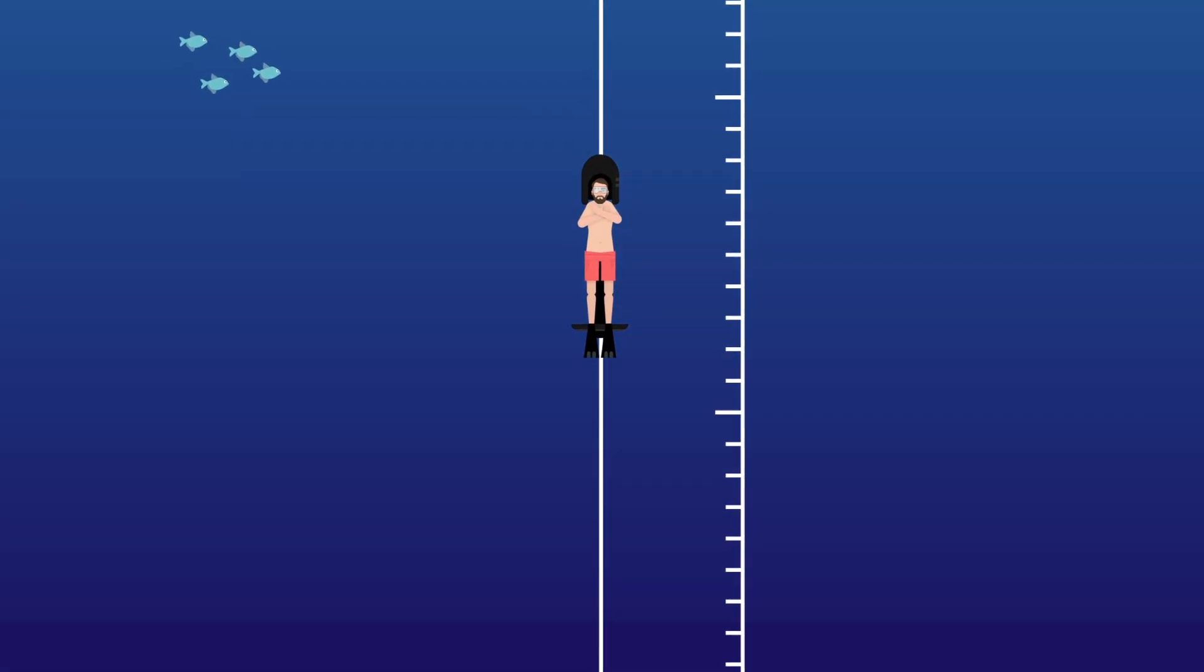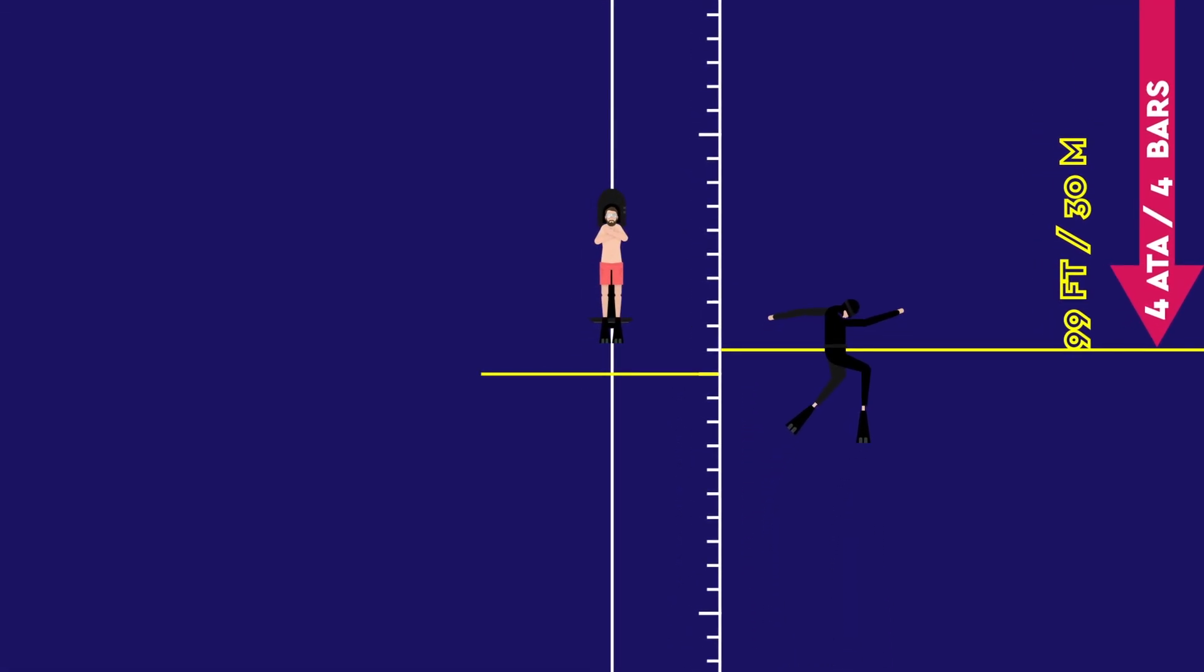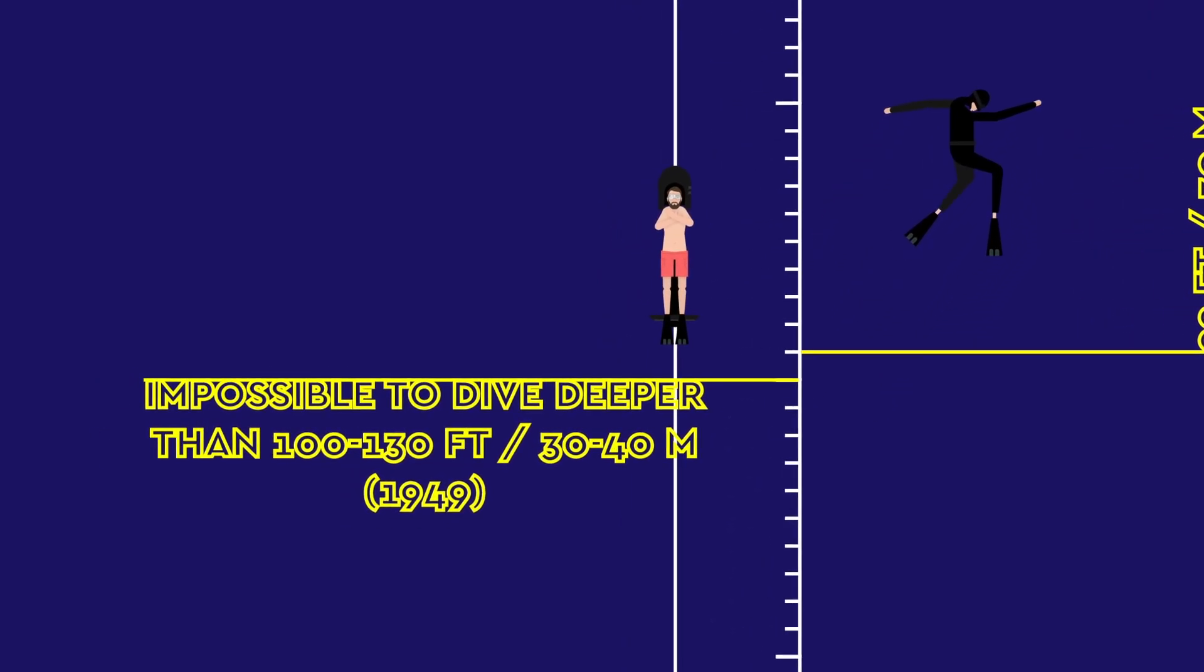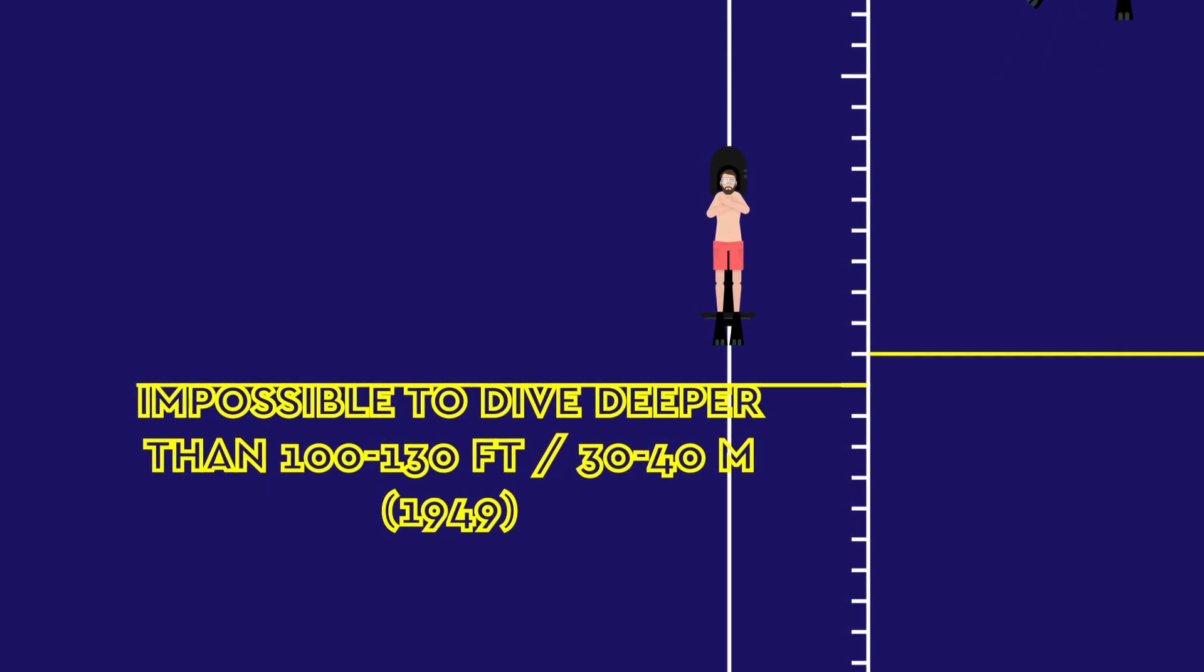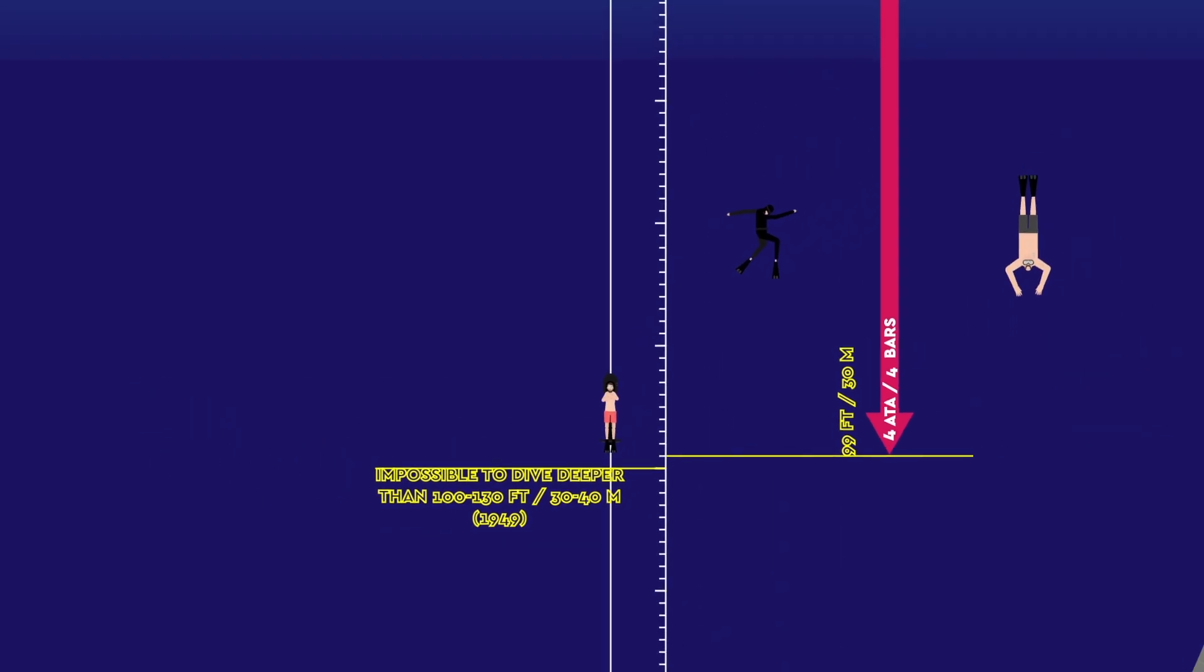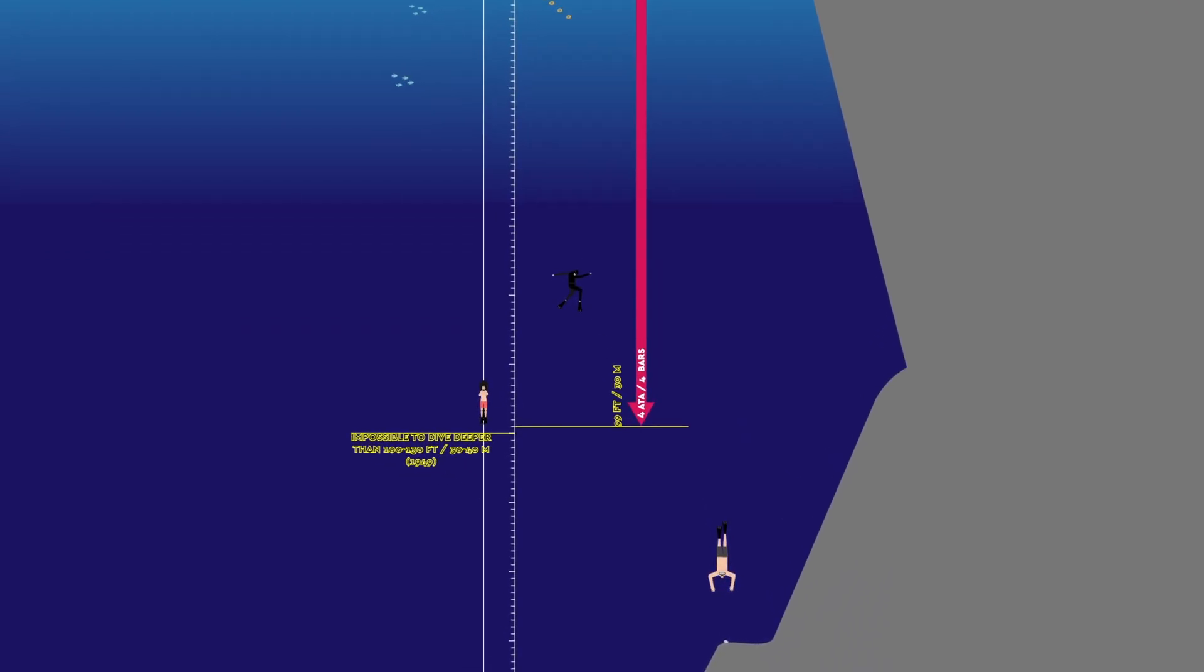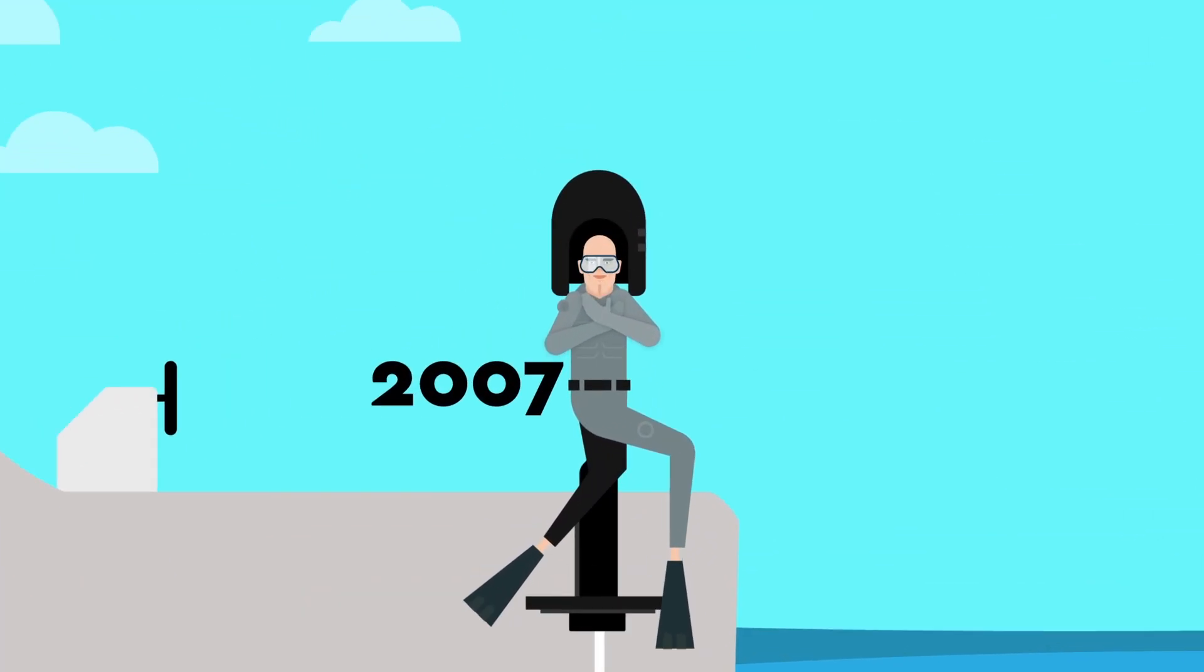In 1949, scientists claimed that it would be impossible to dive deeper than 100 to 130 feet, or 30 to 40 meters deep, without your lungs fatally collapsing. During the 19th century, this is the depth pearl hunters would dive on a single breath to gather oysters and mussels to extract pearls. But in 2007,